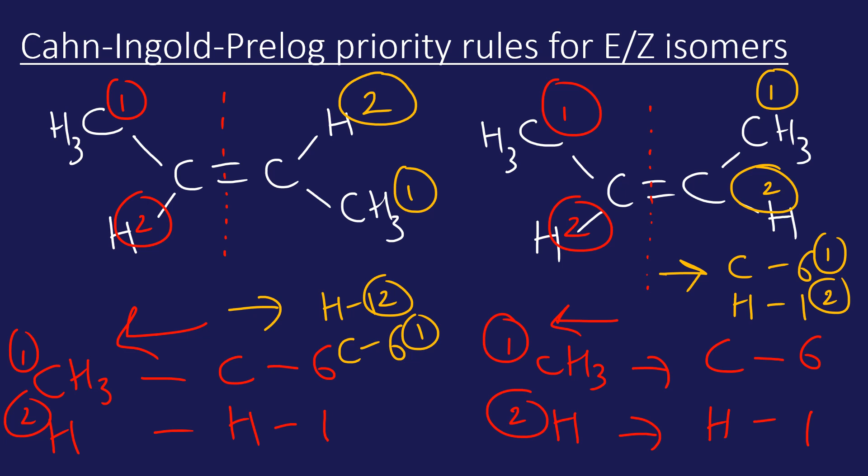Now what we do is look, and if the high-priority groups are on the same side - as in here, the number one priority is on the same side - this is called the Z isomer. My understanding is the Z comes from zusammen in German, which means together, so the Z is zusammen, together.